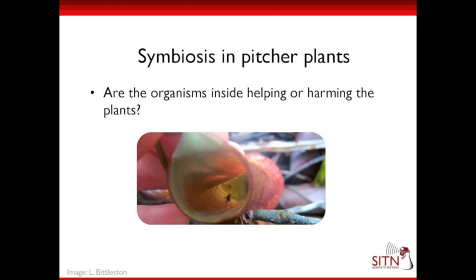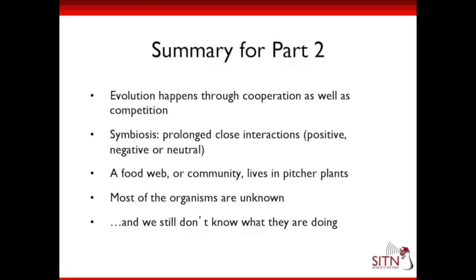What I'm still thinking about and hope to work on in future research is figuring out if the organisms inside are helping or harming the plants — to what extent are they helping access certain nutrients, and to what extent are they taking nutrients out? One way to do this is by looking at genes and functions of things inside these pitchers. Summary for this second section: evolution happens through cooperation as well as competition. Symbiosis is prolonged close interactions that can be positive, negative, or neutral, and most organisms on the planet are involved in symbiosis. A food web lives inside pitcher plants, and most of the organisms found are unknown — this is future work.